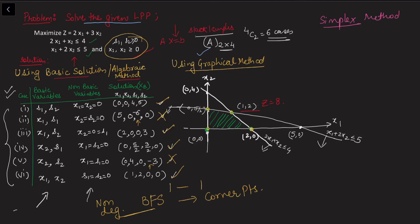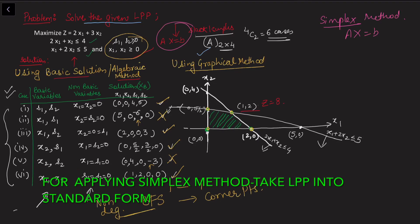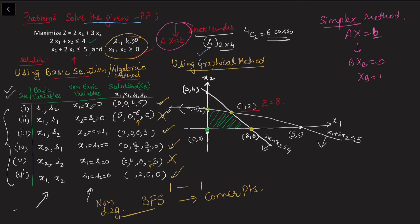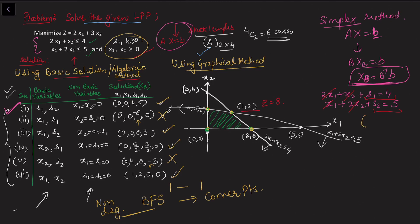The same approach is used for the simplex method. In simplex, I also start by writing the system as Ax = b, then reduce it to B·x_B = b, ensuring the right-hand side is non-negative, where x_B = B⁻¹·b. The easiest initial solution comes from setting the decision variables x1 and x2 to zero. Writing out the constraints: 2x1 + x2 + s1 = 4 and x1 + 2x2 + s2 = 5, setting x1 = x2 = 0 gives s1 = 4 and s2 = 5.